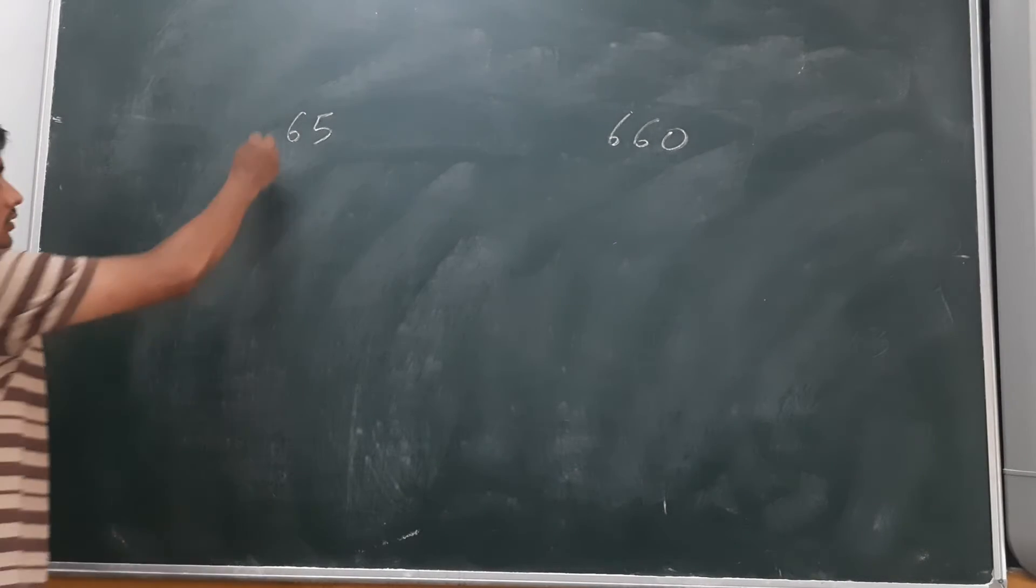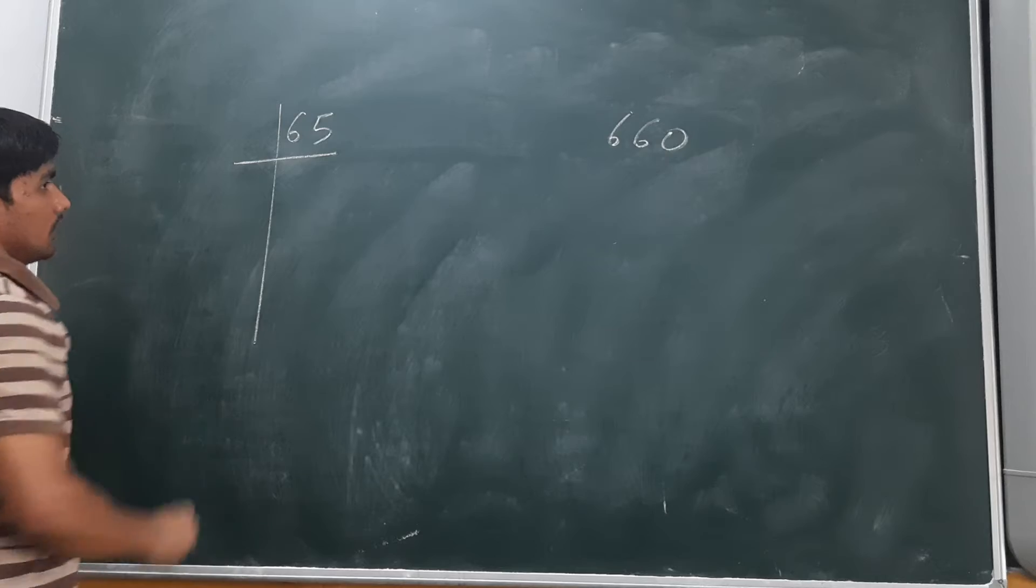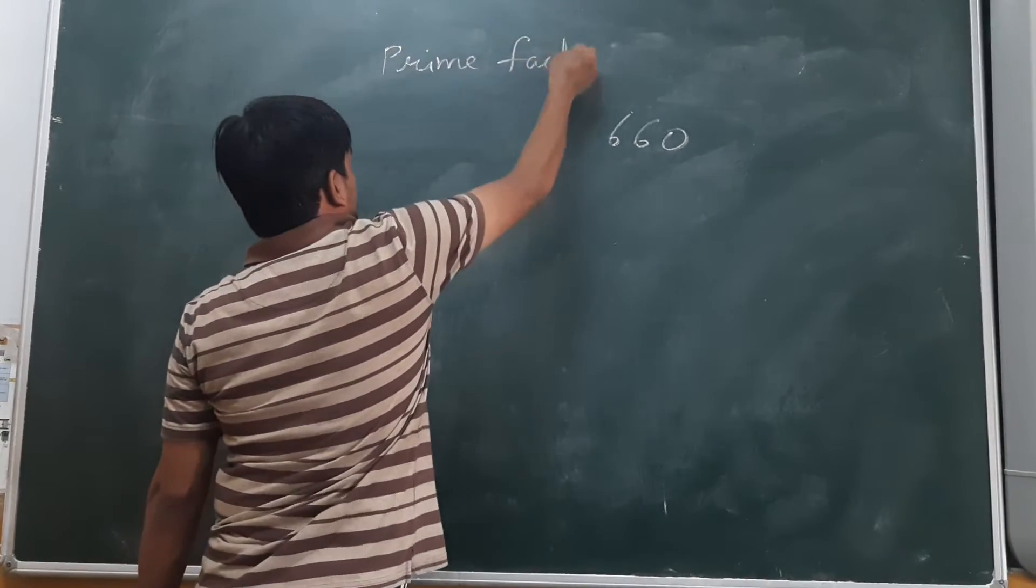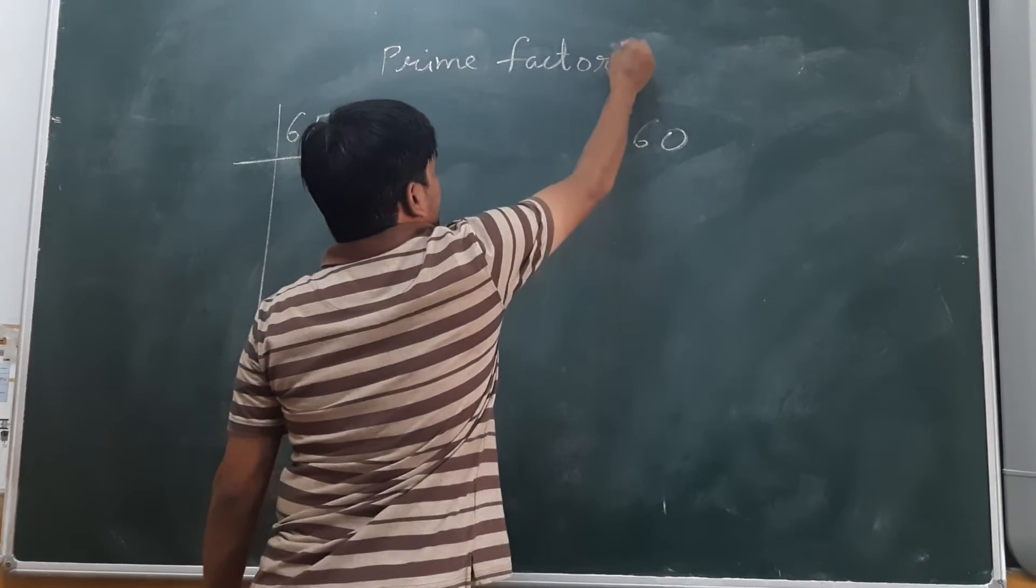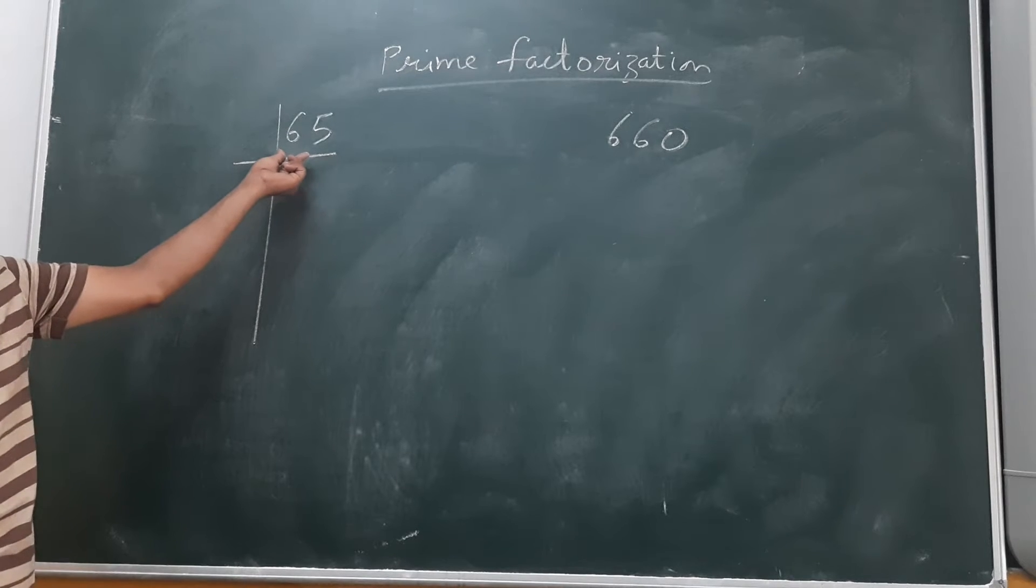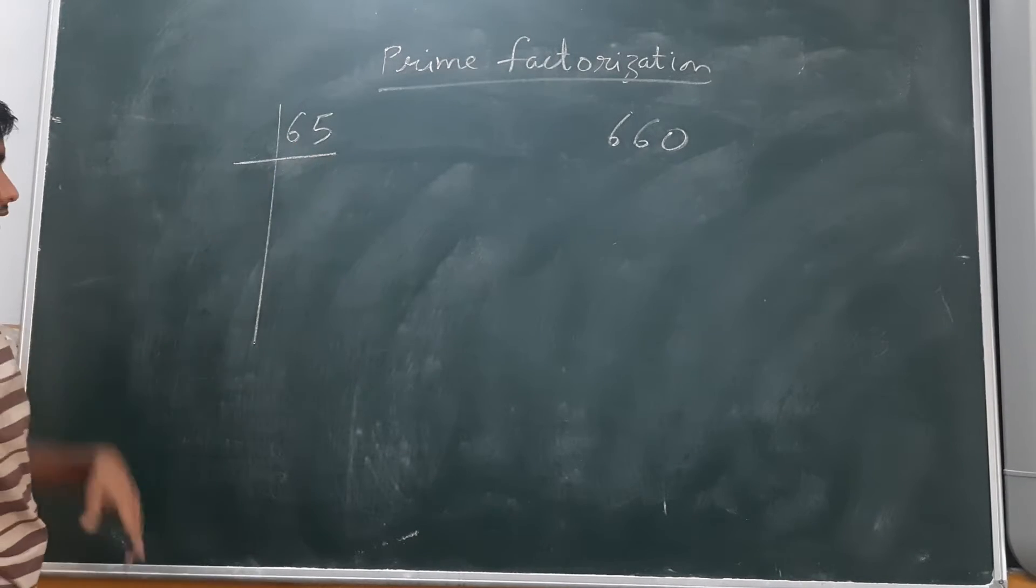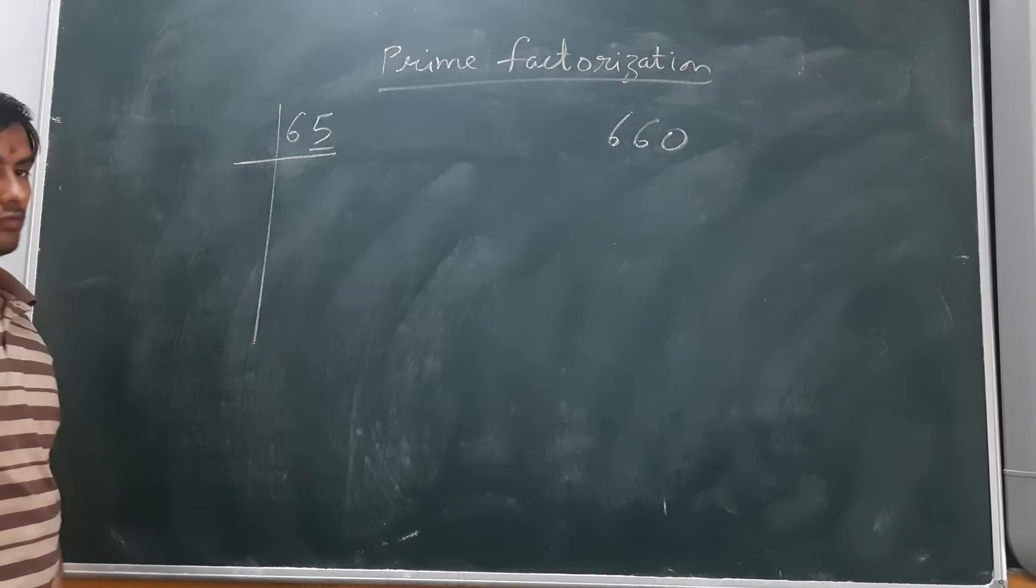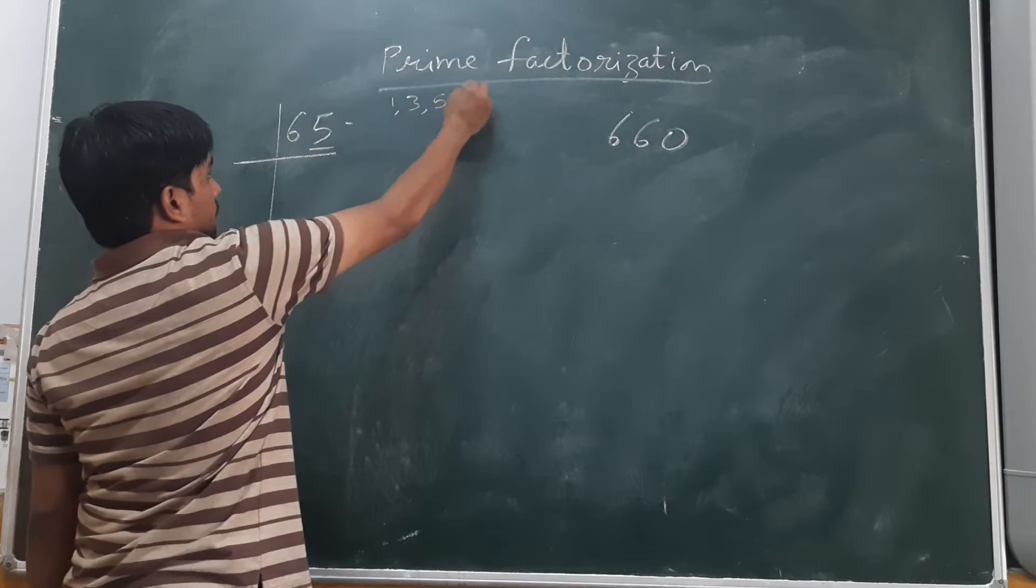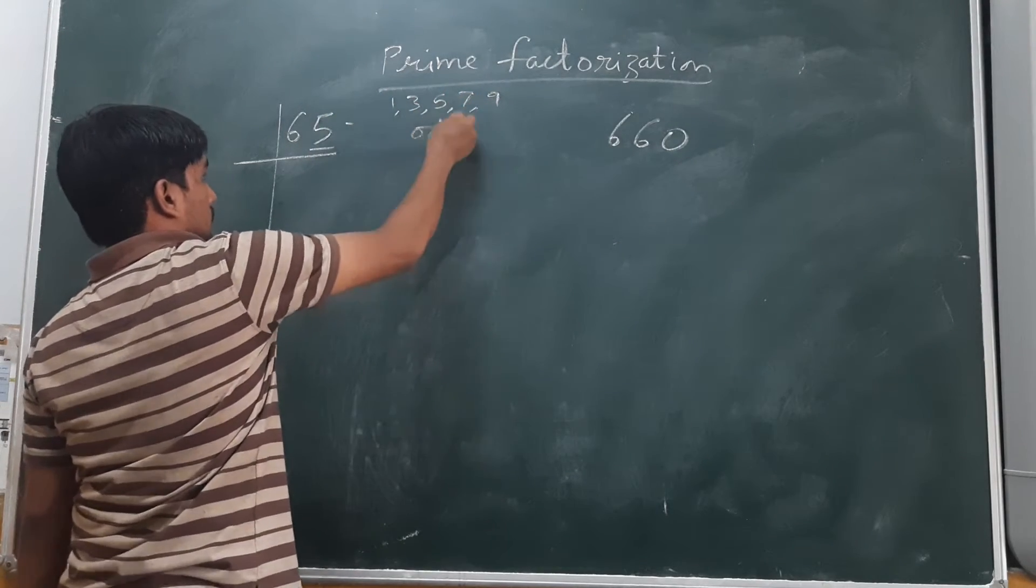So for 65, the prime factorization will start from this number. It's an even or odd number? It's an odd number because it is ending with 5. We know that numbers which are ending in 1, 3, 5, 7, 9 are odd.